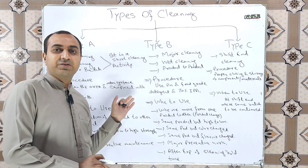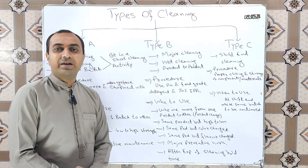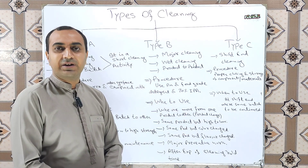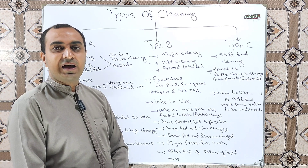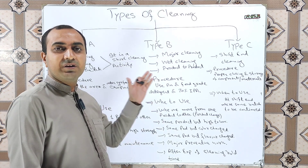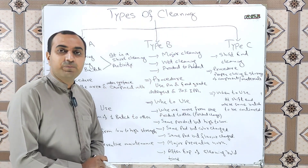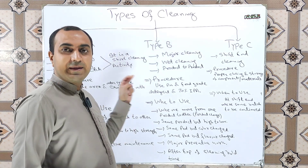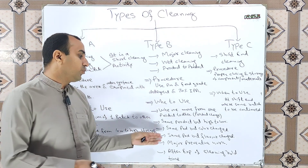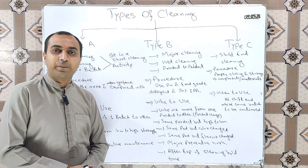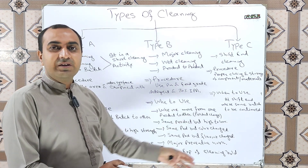We perform Type B cleaning when manufacturing a batch of the same product but with a different color — even if the product is the same, if the color is changed, we use Type B cleaning.